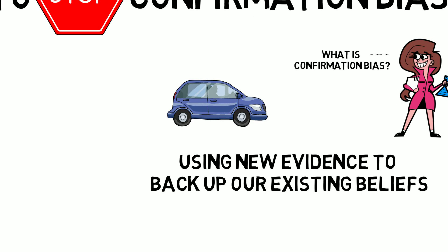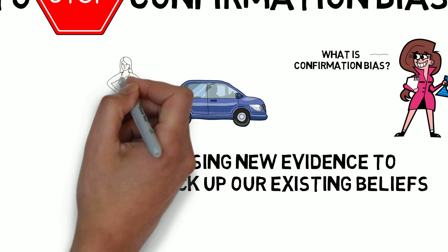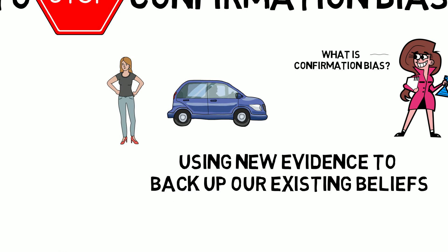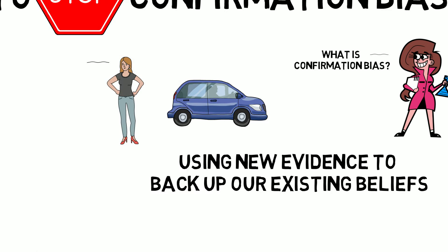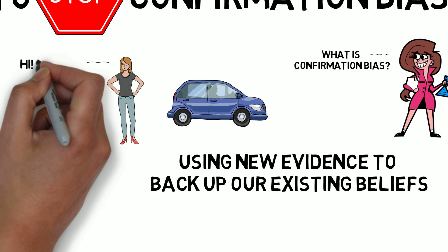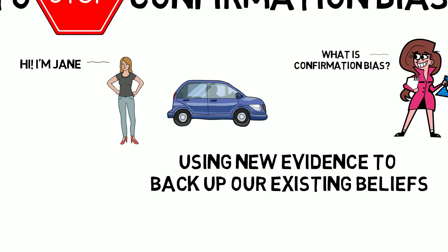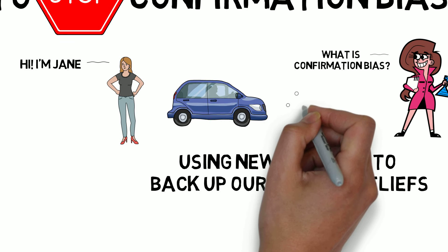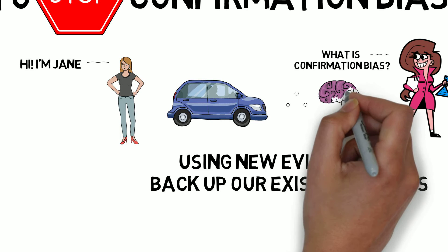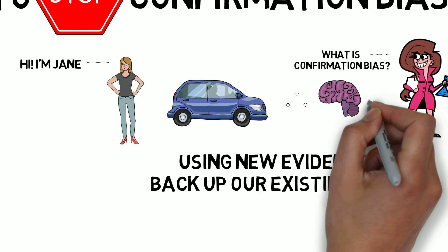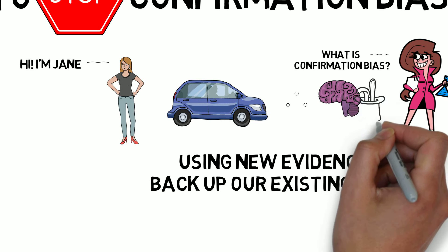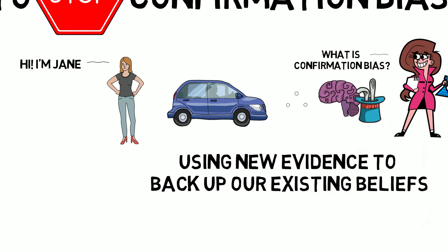In this first example, I'm going to explain how seeing a blue car leads Jane to confirm her belief that she can change reality with her thoughts. Let's say that Jane believes that what she thinks inside her head changes what happens in the real world around her.